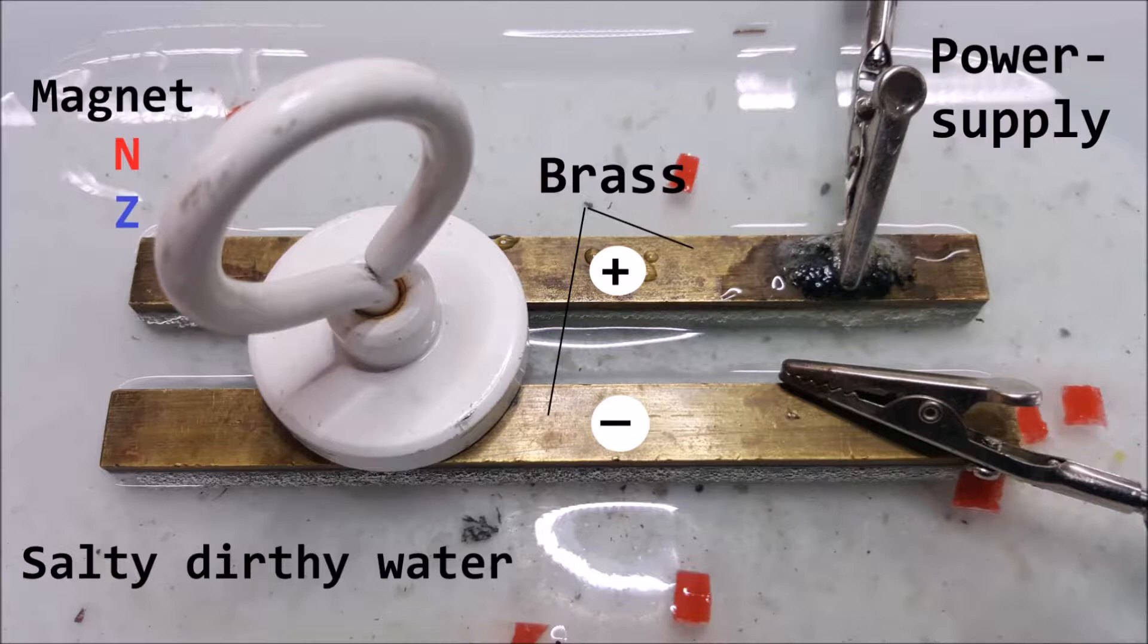You see two metal bars and they're both made of brass. You see a strong magnet. The top of that is north and the bottom is south. And you see a power supply, which is here, 24V DC and it can go up to 5A.